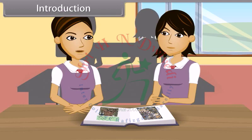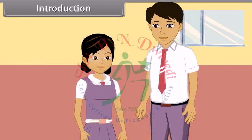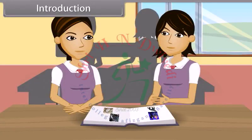Every organism is different from others. In our class also, no two students are similar. Anurag is tallest while Shilpa is shortest in height. The nose of Deepti is sharp and pointed while Akshay's nose is flat and broad.